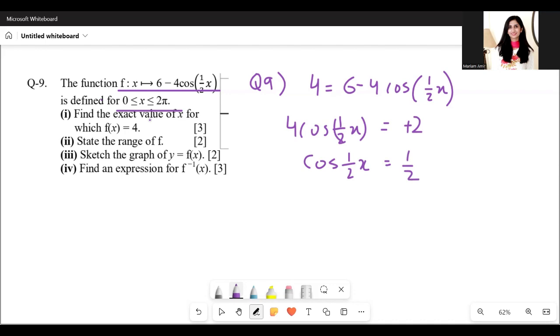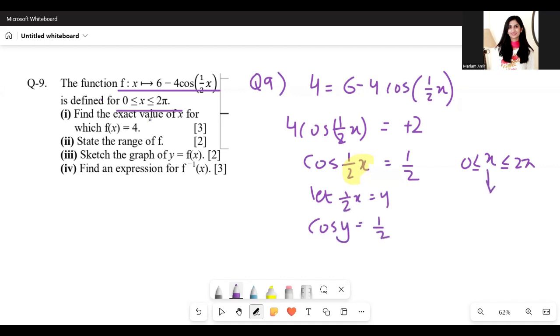Then we take cos inverse, or in fact we have a transformed function. So what we can do is I'm going to write the domain here first, 0 to 2 pi. I'm going to write let half x equals y. So we get cos y equals half.